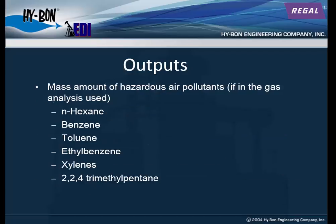The calculator also calculates the mass amounts of hazardous air pollutants, or HAPs, provided you enter the mole percents for those components. Those components are normal hexane, benzene, toluene, ethyl benzene, xylenes, and 2,2,4-trimethyl pentane.